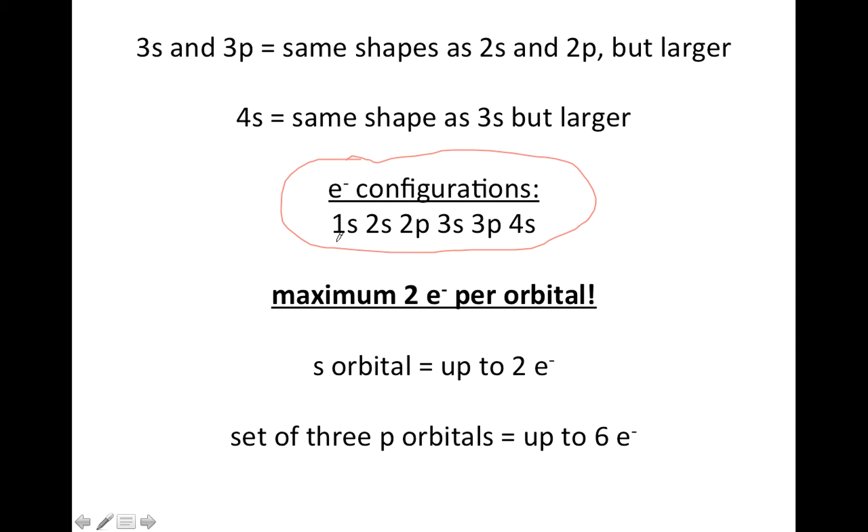So what I've done here is written the possible orbitals where you could put electrons, and I've put them in the order that you're going to start putting the electrons in. Remember the rule, maximum two electrons per orbital. So an s orbital, you can fit up to two. P orbitals, since they come in sets of three, with two electrons in each, you can fit up to six total electrons in a set of p orbitals.